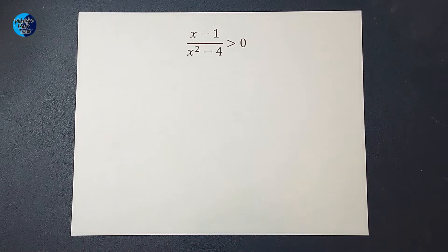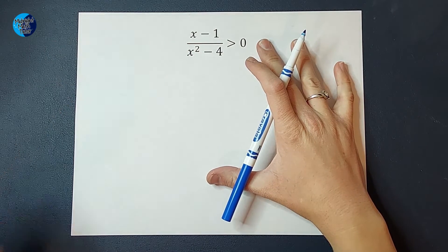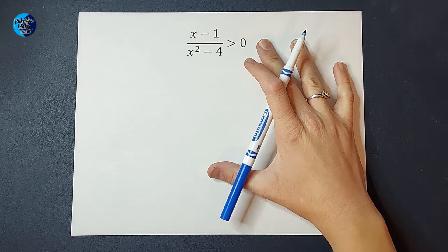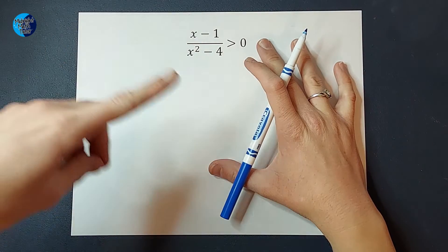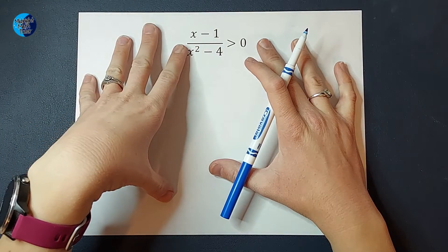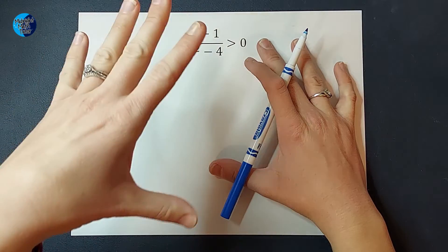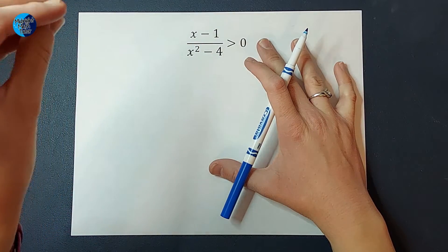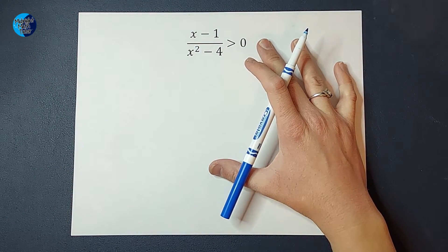Hey guys, we're going to solve this rational inequality. I'm going to give you some pretty specific steps to follow, and you might be like, okay, I can do that, but I don't really get why that gave us the answer. But then at the end, stick around because I'm going to show you why it worked — and it makes me very happy. So I hope you'll stick around for that part.